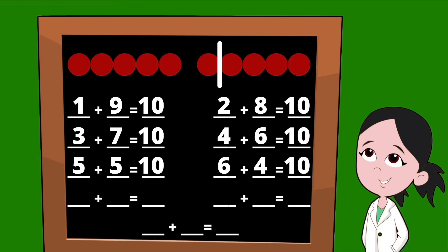Let's go ahead and slide our line over to the right once again and count the dots to the left of our line. There are seven dots on the left, so our first partner is the number seven. To the right of our line, we have just three dots, so our second partner is the number three. Seven plus three equals 10.